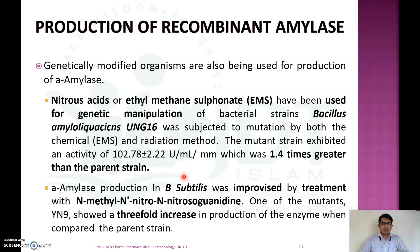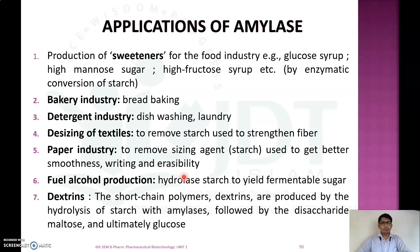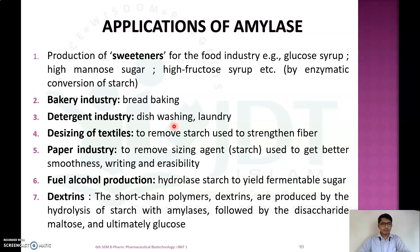That is all about the production of recombinant amylase by recombinant DNA technology. Now for the applications of amylase: it is mainly used for the production of sweeteners for the food industry like glucose syrup, high amino sugar, and high fructose syrup. It is also used in the bakery industry for bread baking, and in the detergent industry for dishwashing and laundry to remove starch material.